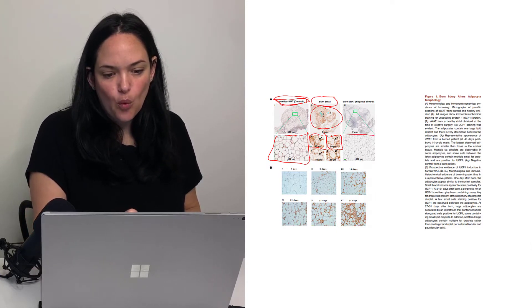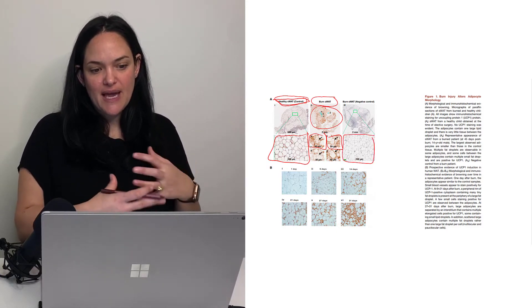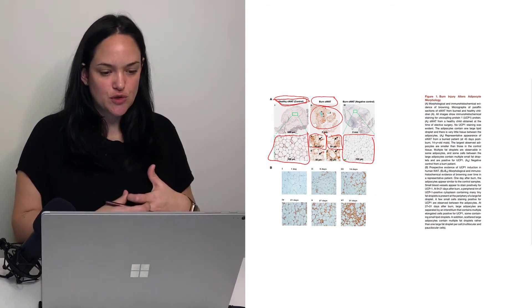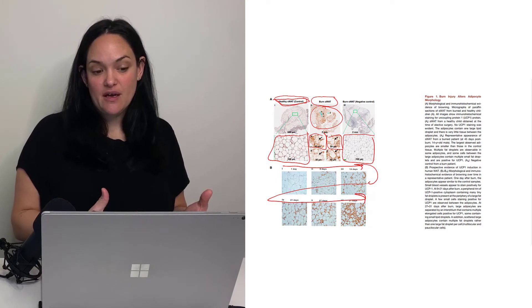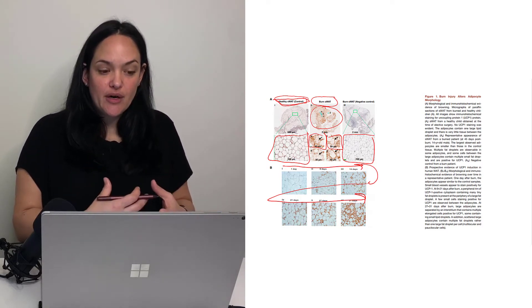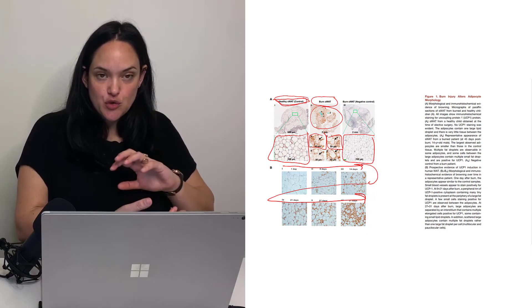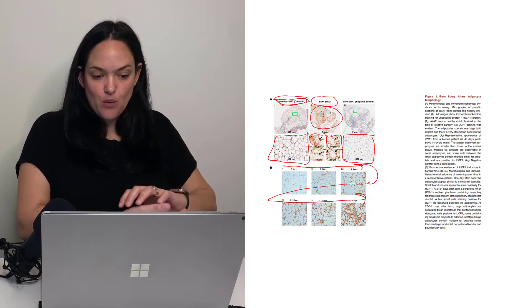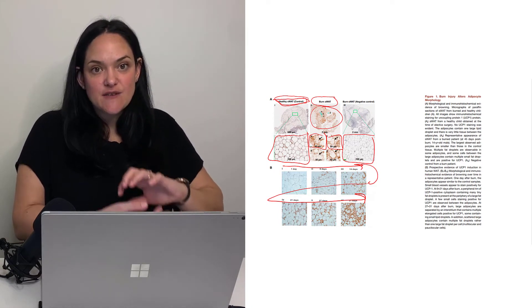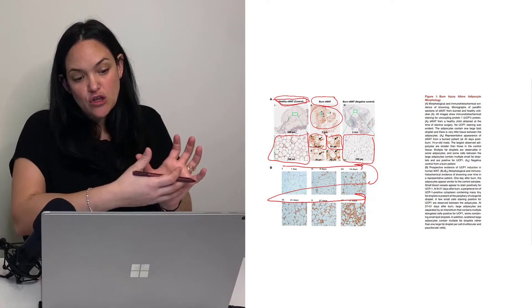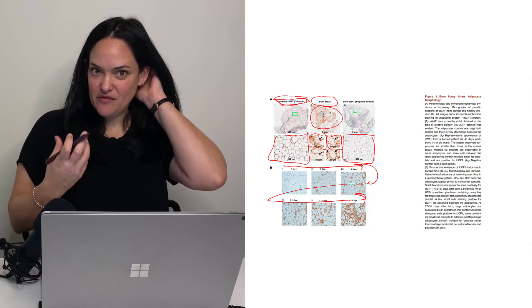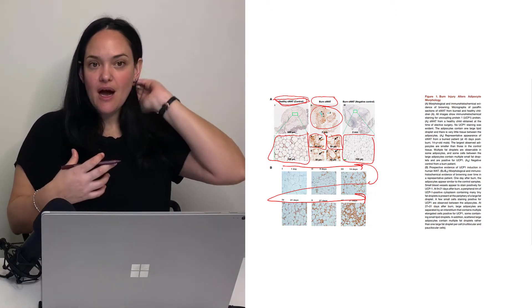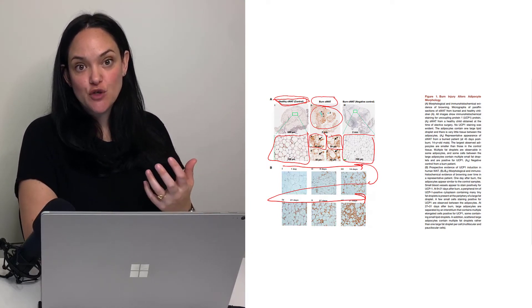This compares the more white sections found from a burn victim used as controls. What this shows is the process of browning, because we're looking at a person post burn — samples of their white adipose tissue after burn from day one to day 31. These have been stained for uncoupling protein one, and we see a slowly but increasingly increasing amount of visualized uncoupling protein one almost four weeks after a burn.